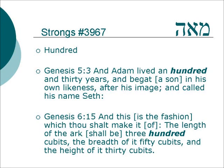Genesis 6:15 — 'And this is the fashion of which thou shalt make it. The length of the ark shall be three hundred cubits, the breadth of it fifty cubits, and the height of it thirty cubits.' So we see that it is used to measure length.